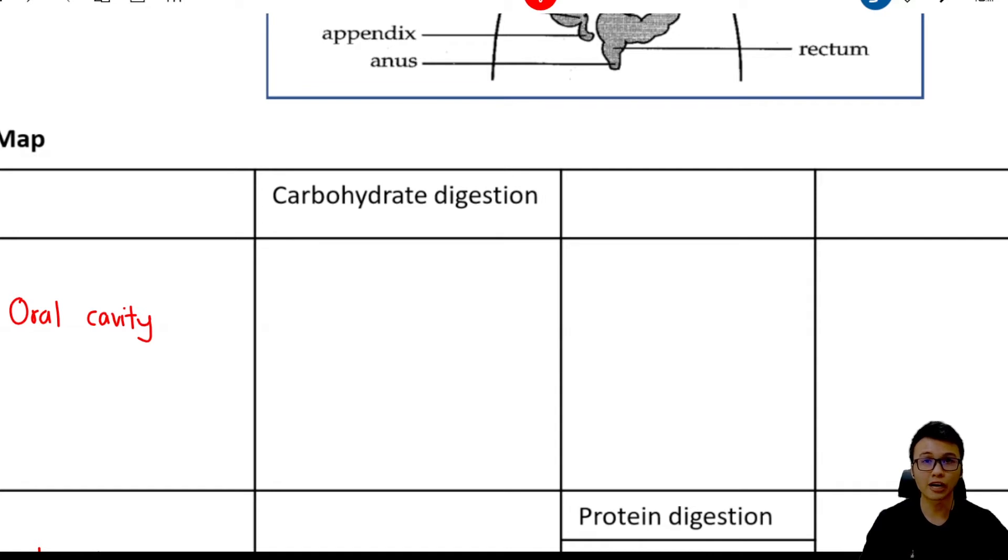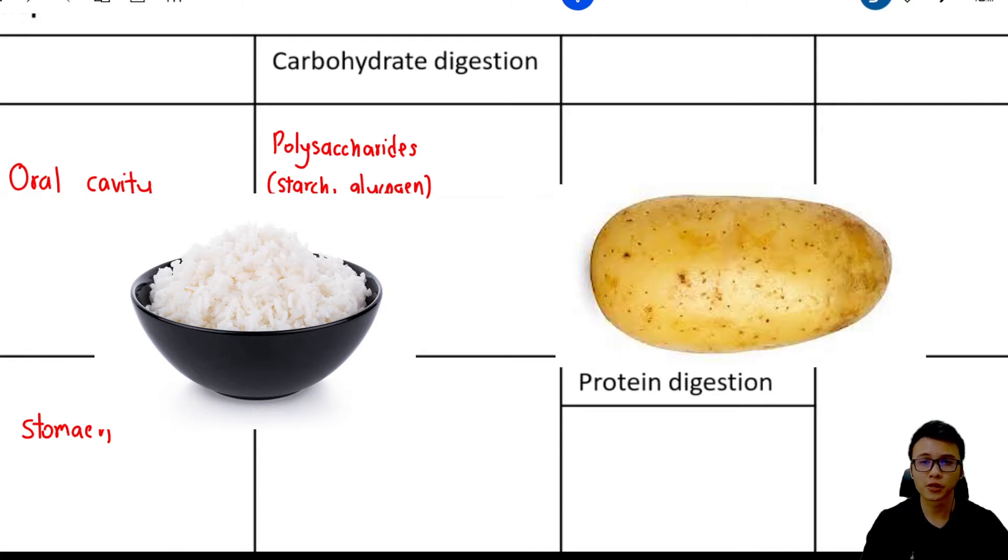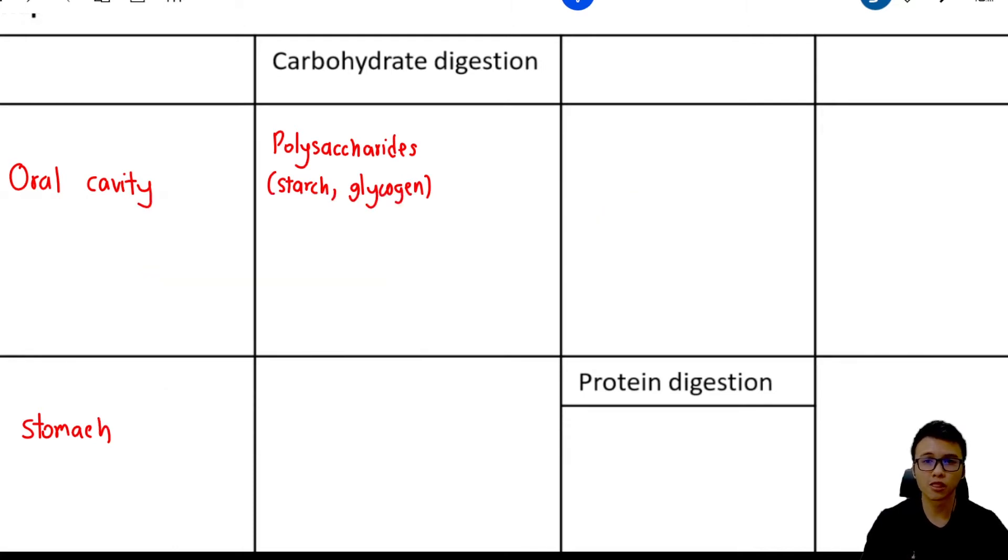Let's begin with the carbohydrate digestion. We're going to start with polysaccharides, for example, starch and glycogen. You can get your starch from rice or potato. I didn't include cellulose here because cellulose cannot be digested by our digestive system. Starch and glycogen will be digested by the protein called salivary amylase that can be found in our saliva. It will be digested into smaller polysaccharides, and some of the starch will be digested into maltose.